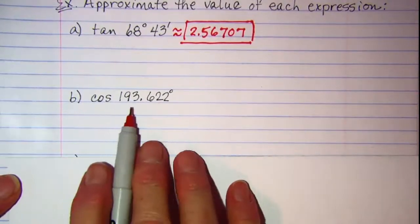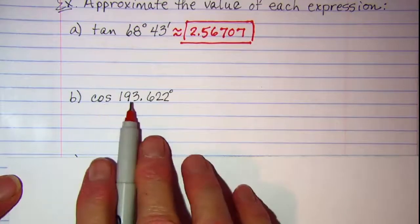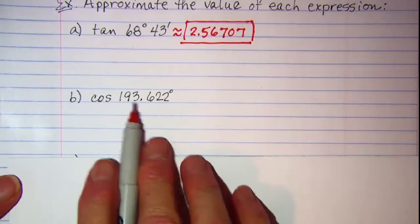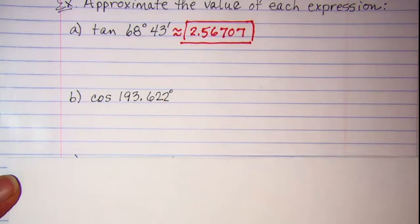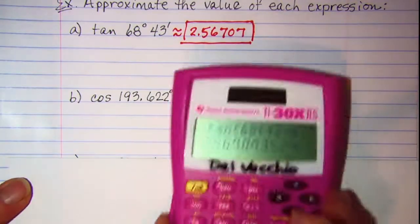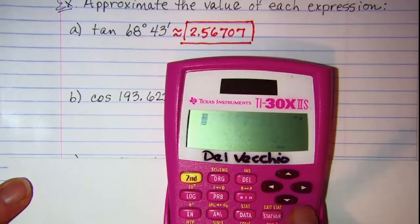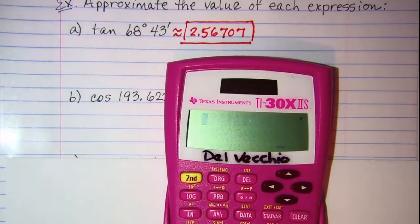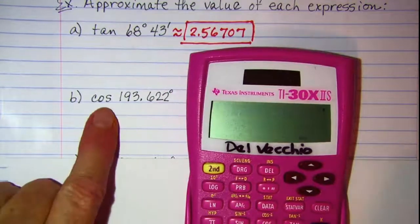In this problem, we want the cosine of 193.622. This is already in decimal degrees, so all I need to do is enter the trig function,